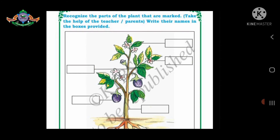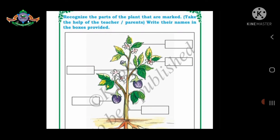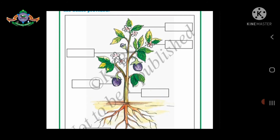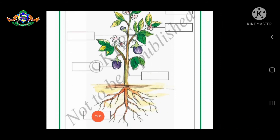On the next page, you can see: recognize the parts of the plant that are marked. Take the help of your teacher or parents and write the names in the boxes provided. Now let us recognize the parts of the plant. Here is one plant. First one — this is roots. And this is trunk, also called stem. Then fruit, branch, flower, and leaves.